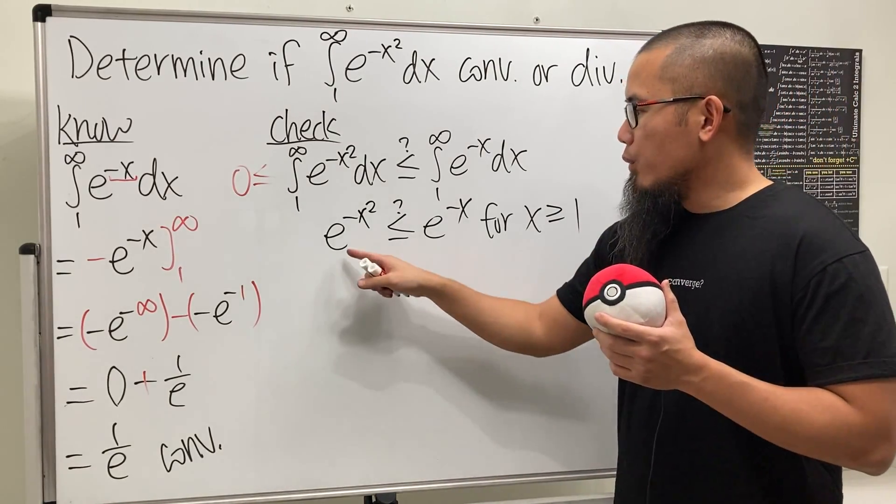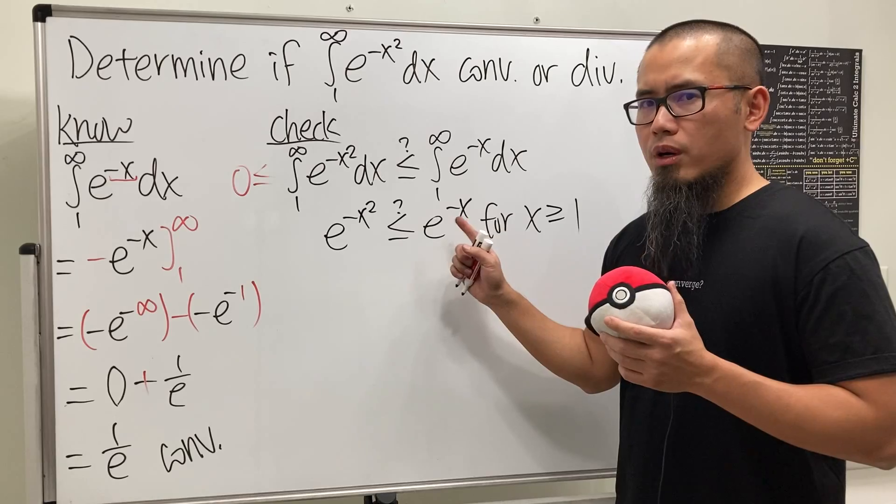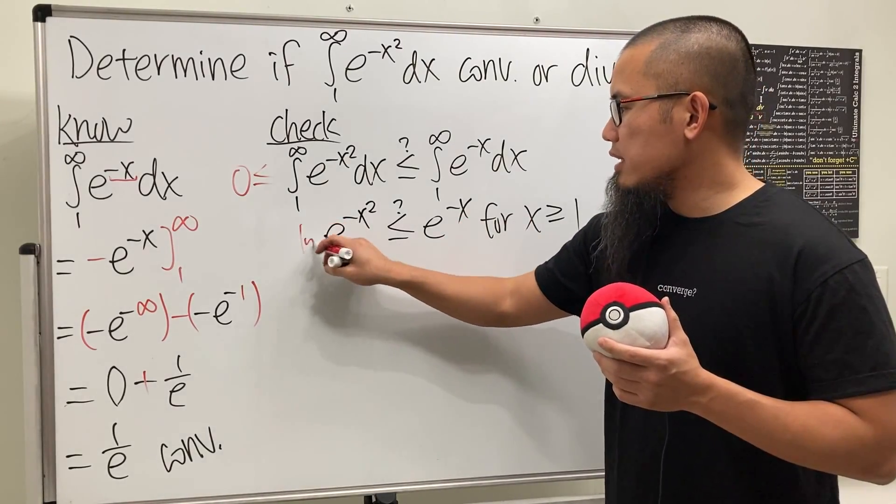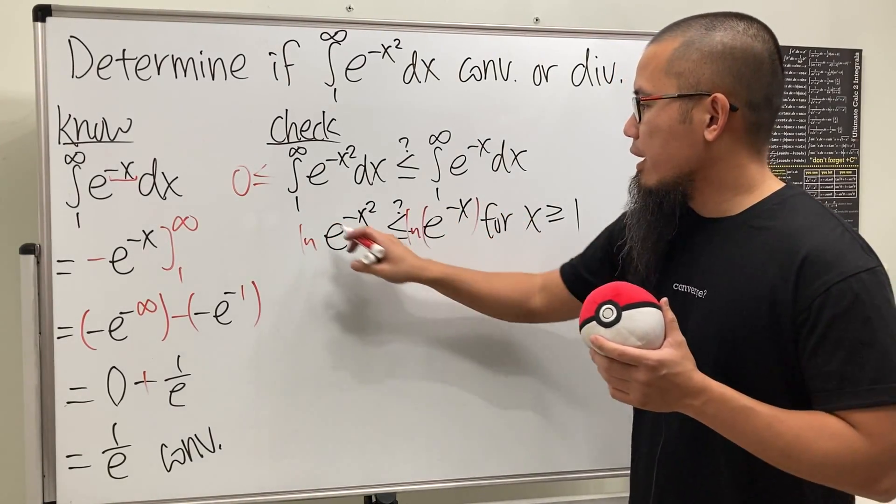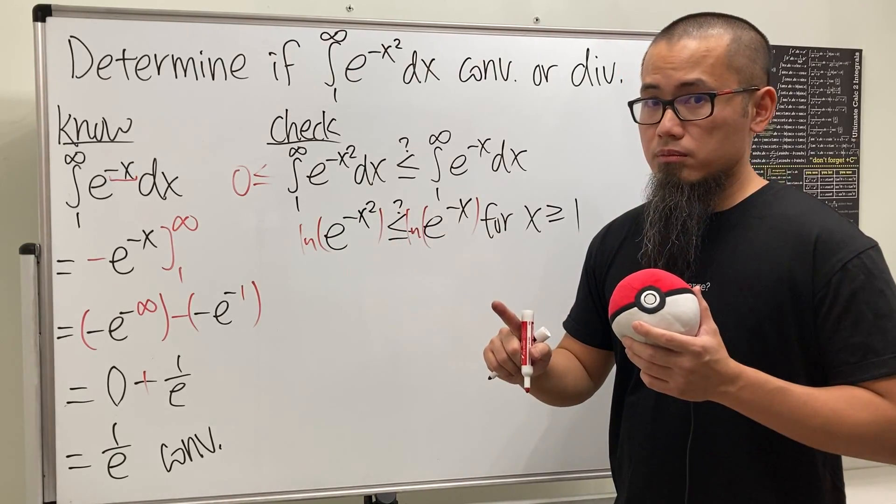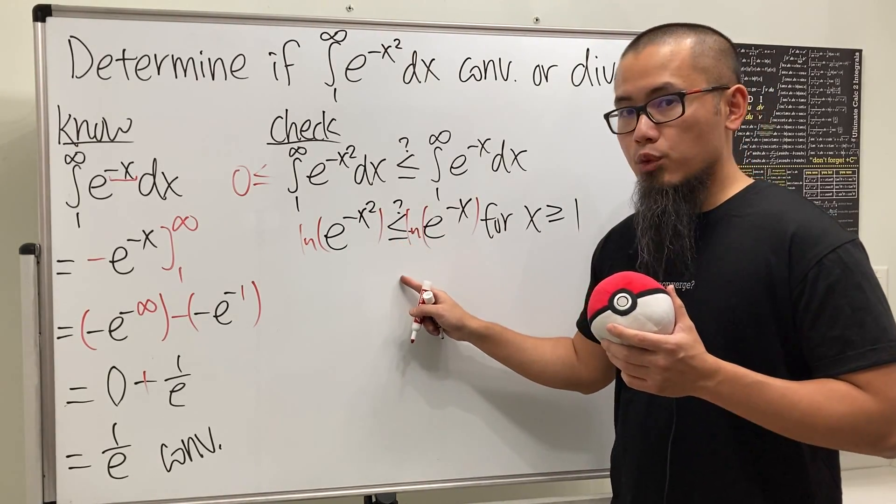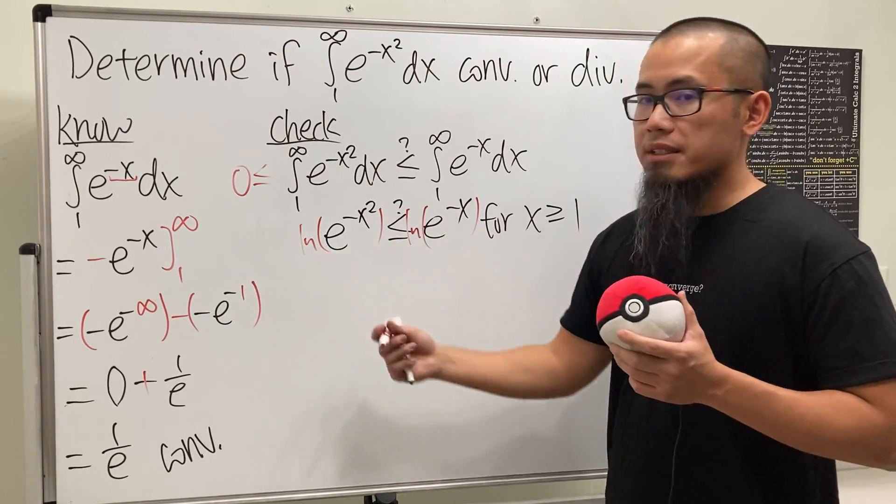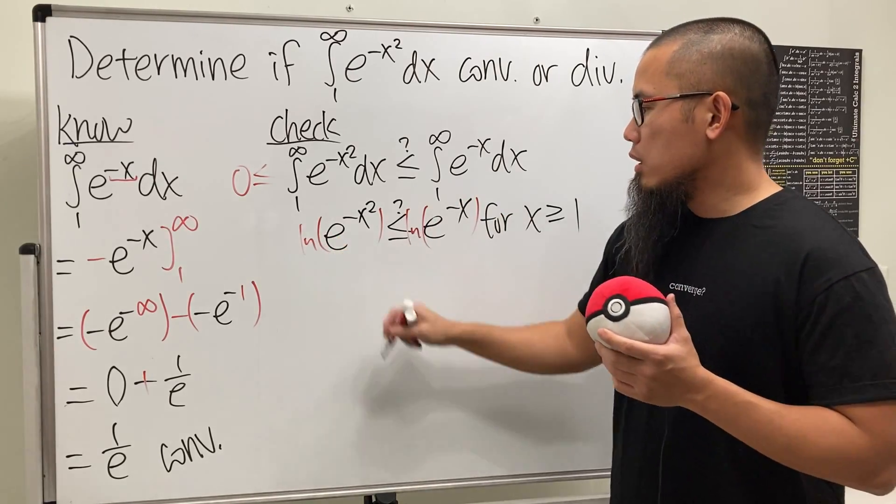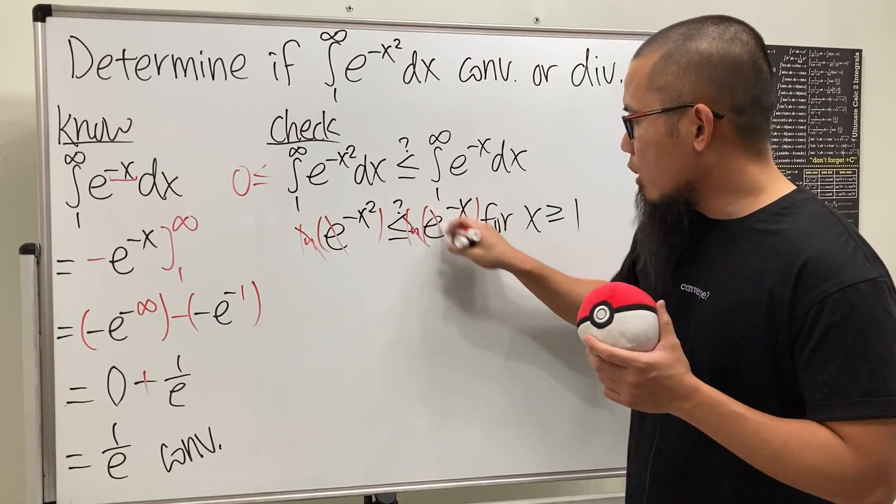And we can just compare the functions inside. So here we get e to the negative x squared. Is this less than or equal to e to the negative x? And we just care about x from 1 to infinity, so x is greater than or equal to 1. Now check this out. We have e to this power and e to this power. What we can do is, we can just take the ln on both sides. And when we do that, we can just preserve the inequality because ln is an increasing function.